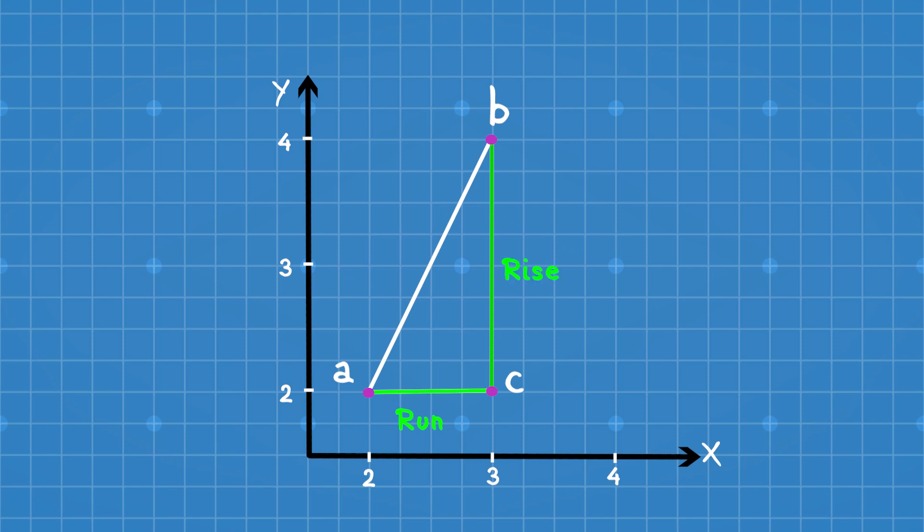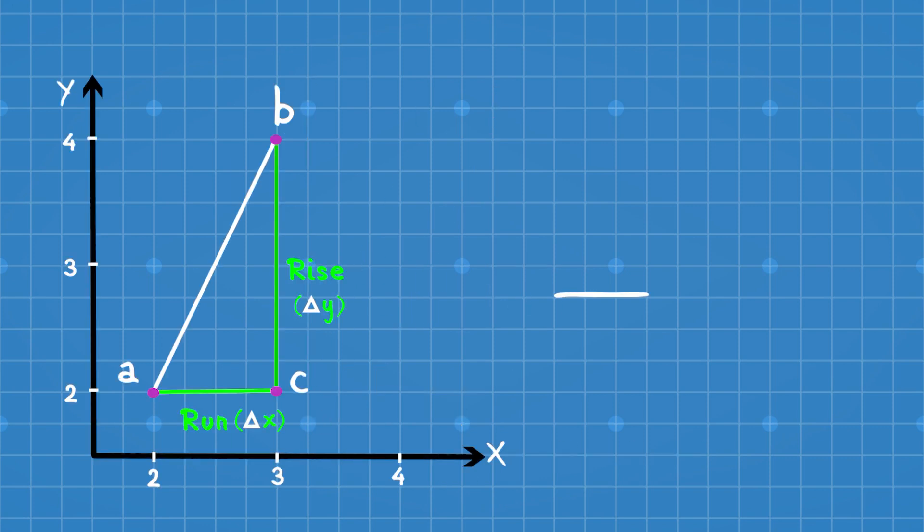The horizontal line AC is called run and the vertical line BC is called rise. Run means change in x value and rise means change in y value. Dividing rise by run gives the slope m.